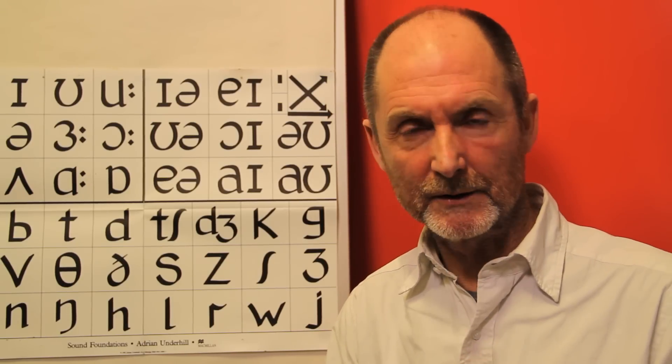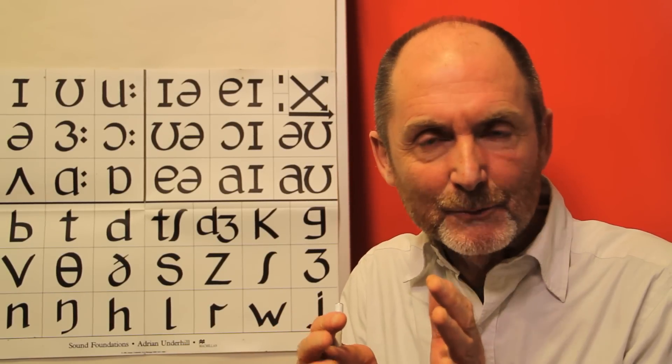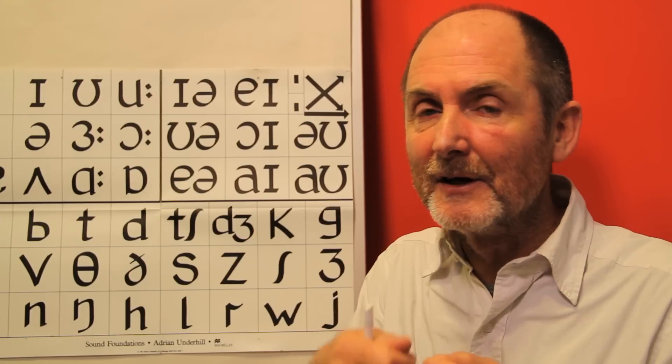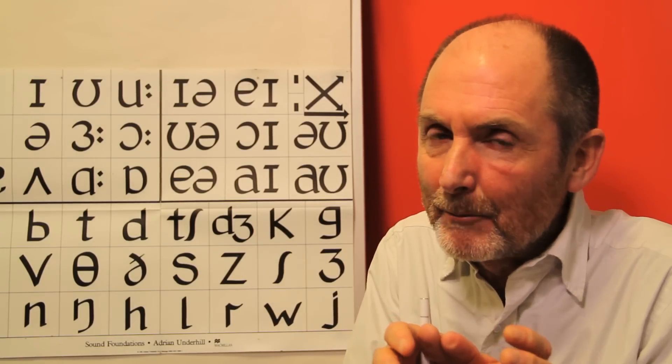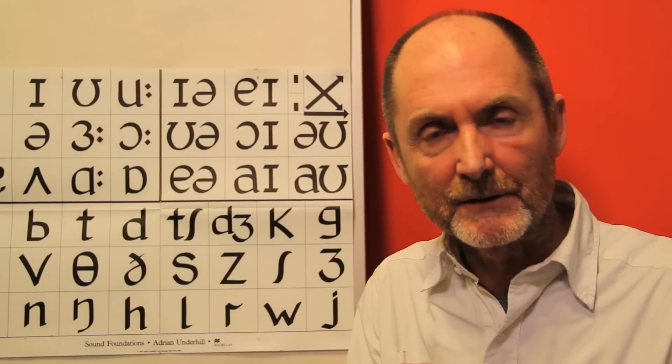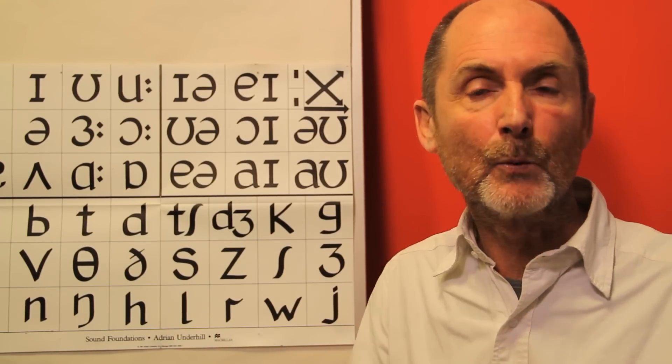Level two is words. So we put the sounds together into words, we connect them up, we join them. We have to add stress, so we emphasise some bits and not other bits. The result is a word. So that's level two. Sounds come together, we add stress, we get words.